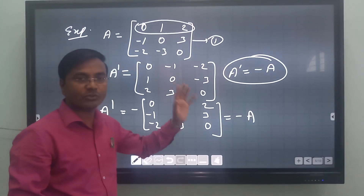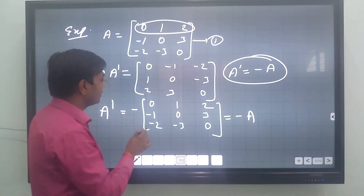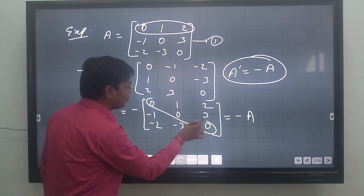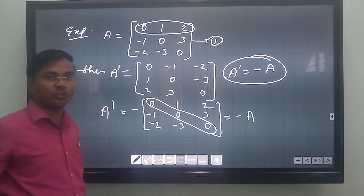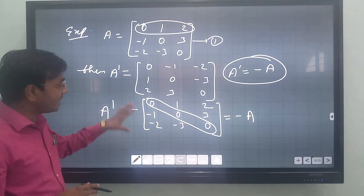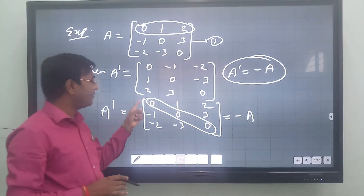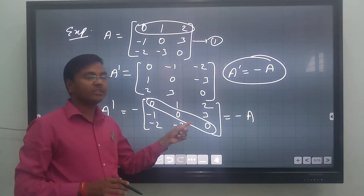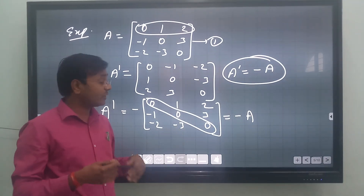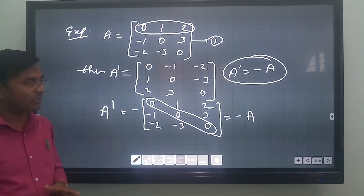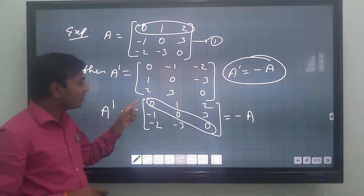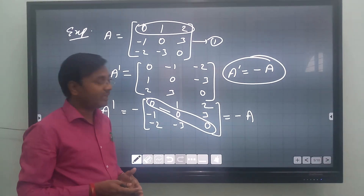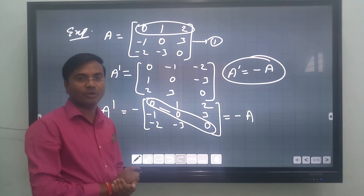We have also seen that the diagonal elements A11, A22, A33 are all 0. This happens whenever the principal diagonal elements are 0 in a skew-symmetric matrix. You can try to find a skew-symmetric matrix where diagonal elements are not 0 — I am sure you won't find any.